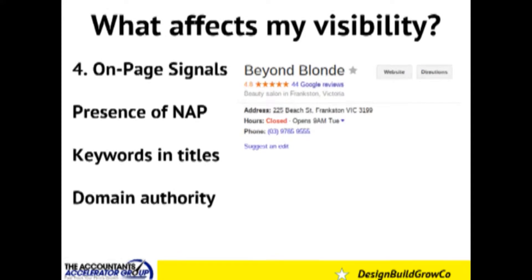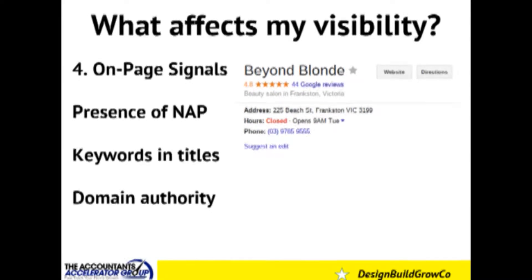Next is on-page signals, which is a really easy one. It's about getting consistency of your NAP — your name, address, and phone number. Make sure your business name is written everywhere online that you can control in one consistent format. Make sure your address is in the exact same format across all directories, your own site, your Google My Business listing, and so forth — same for your phone number. Also, do you have keywords in titles on your site, and does your domain have some authority? A site that's been live for ten years is seen as having more authority than something that launched last week.